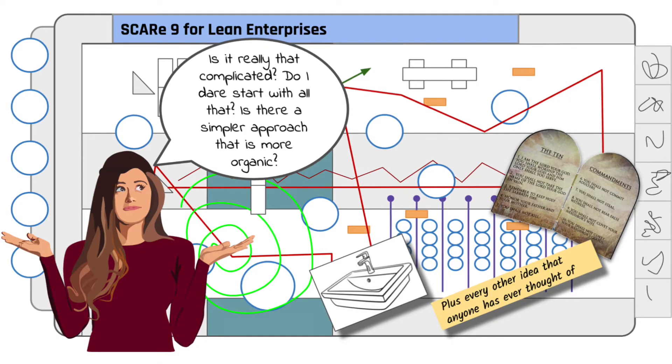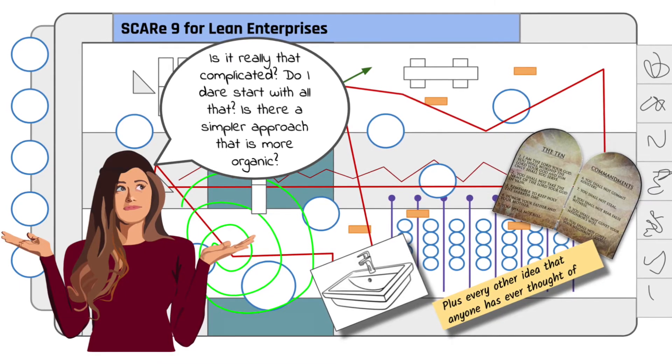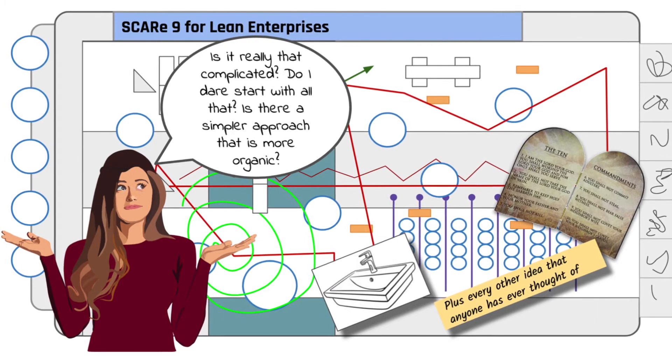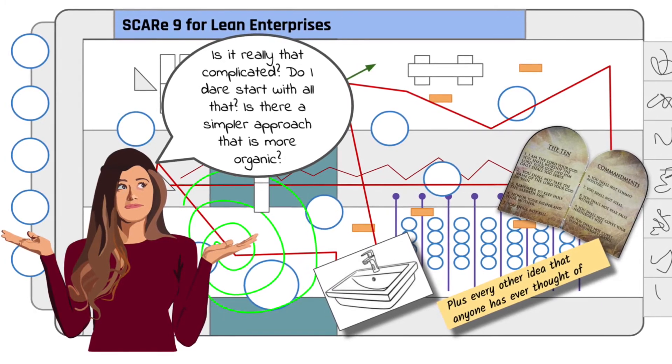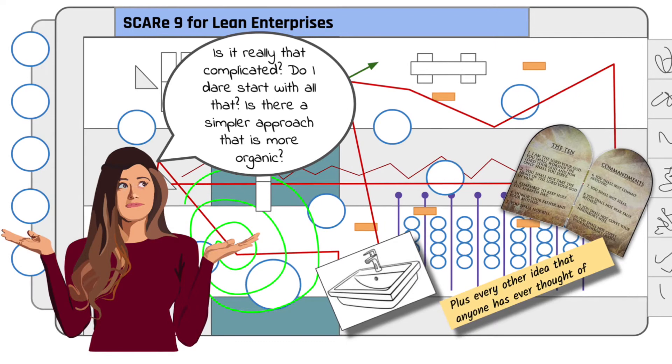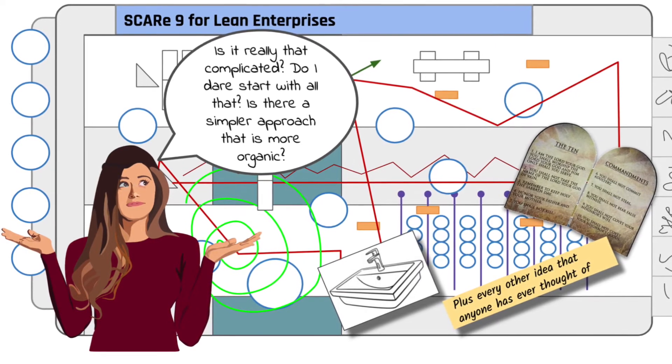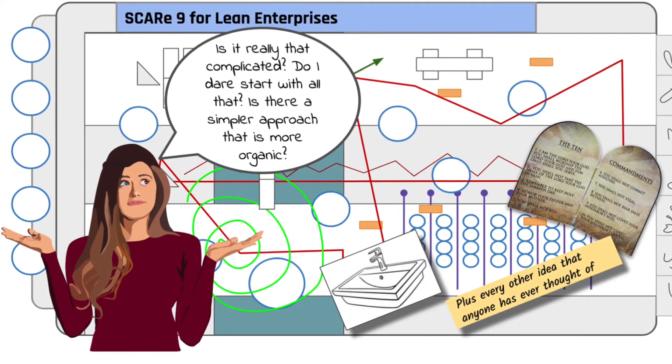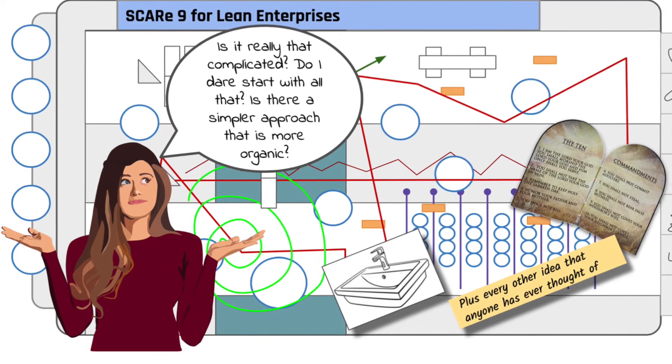The problem is, while some companies seem able to do these things, others struggle. Most companies that try to use agile approaches end up mired in complex processes. They recreate a different kind of bureaucracy with lots of roles and rules.